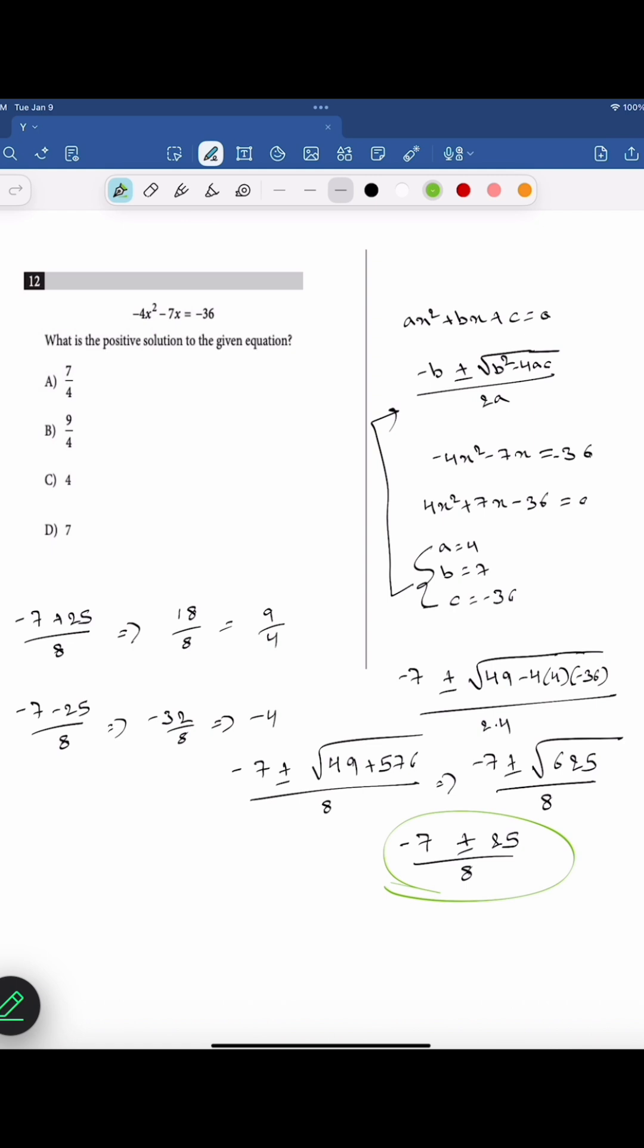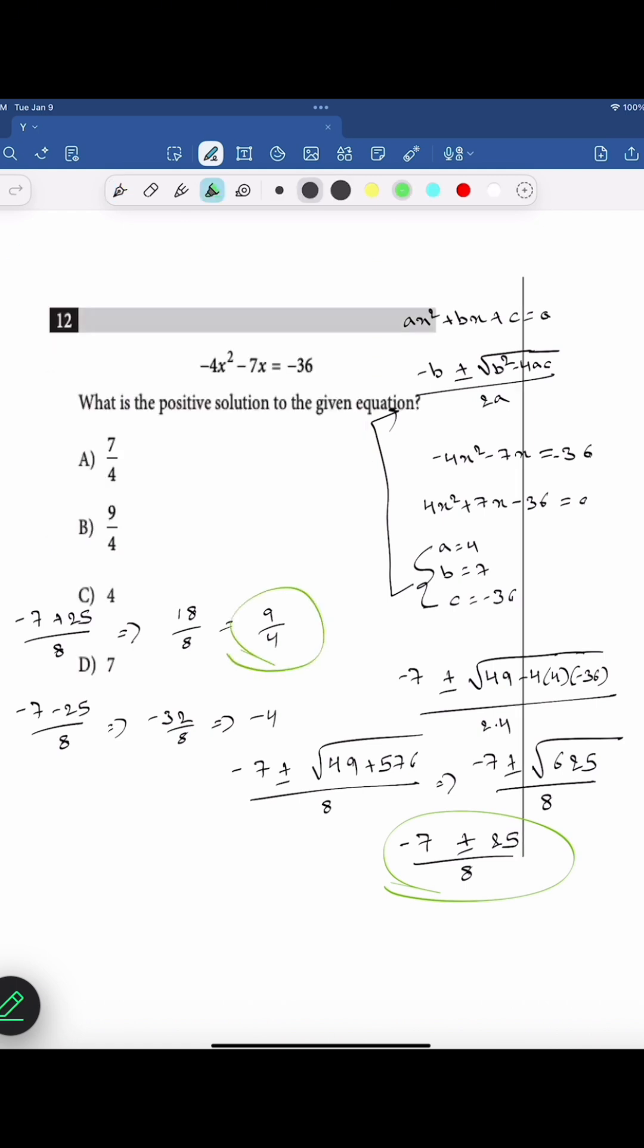In the question, they are asking only for the positive solution. So, the answer is 9 by 4. The answer is B.